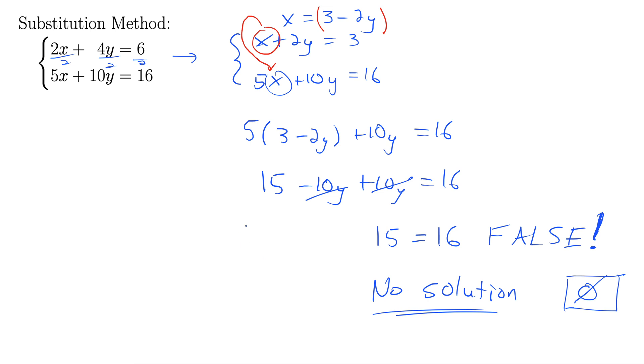And this works anytime. We could have done this differently and gotten answers like 1 equals 0, or something like that, 5 equals 10. There's a bunch of ways these can go. But when you arrive at some answer that is blatantly false and no variables are involved, the answer is always no solution.